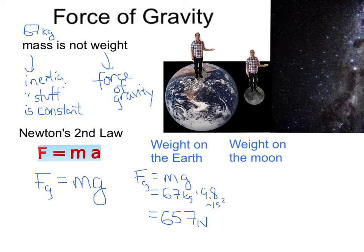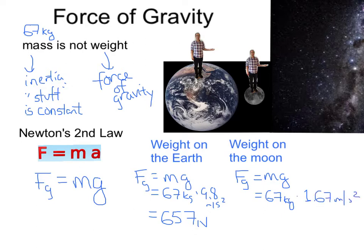Now, if I stand on the moon, what is my weight on the moon? Let's take our force of gravity equation, which is defined as mass times the acceleration due to gravity. My mass is still 67 kilograms — that's constant no matter where I am. But the acceleration due to gravity on the moon is much less than that on the earth. It's 1.67 meters per second squared, because the moon is smaller in size and also has less mass, so it can't pull on me as much as the earth can. This calculation results in my weight on the moon being 112 newtons.